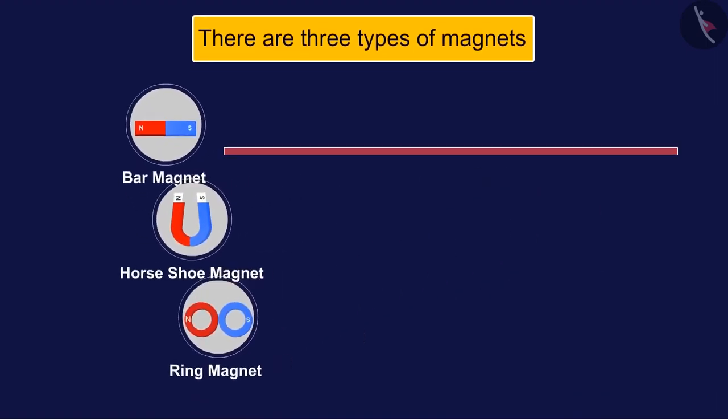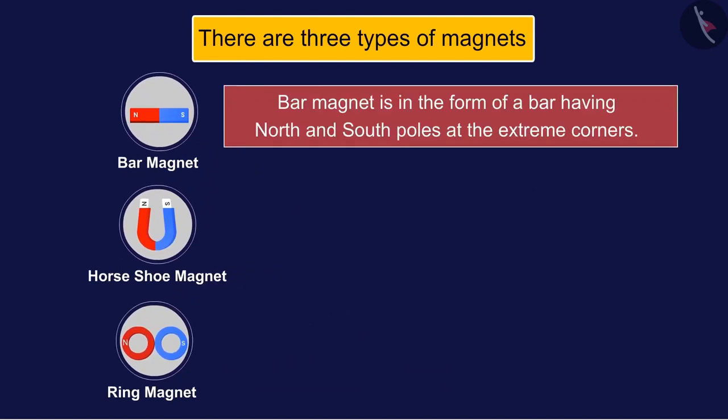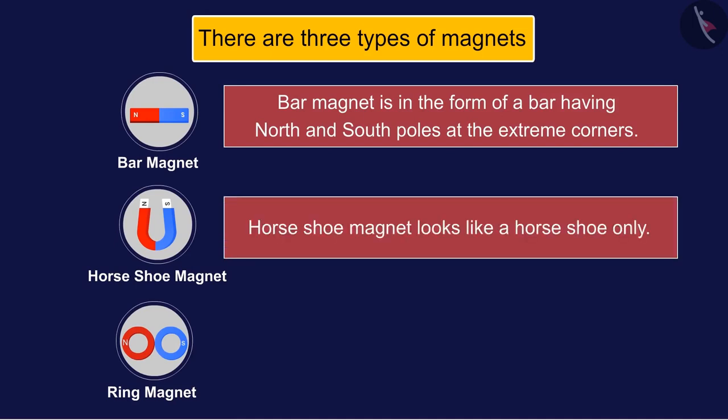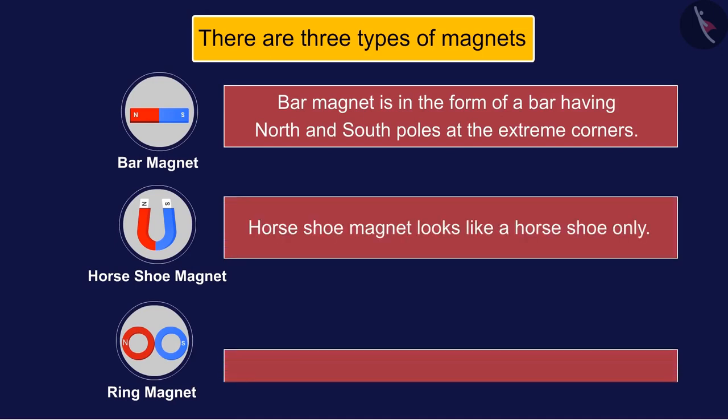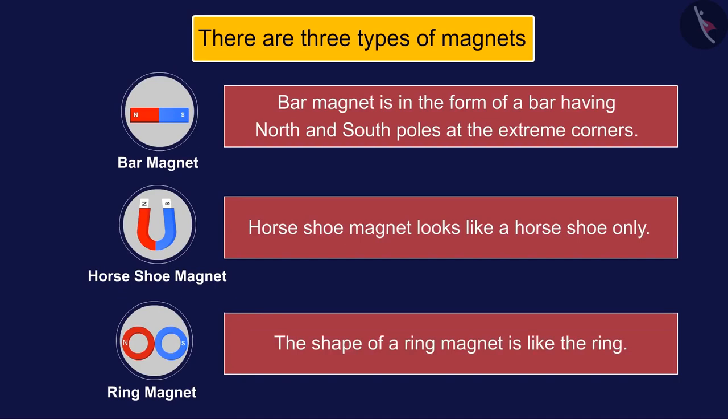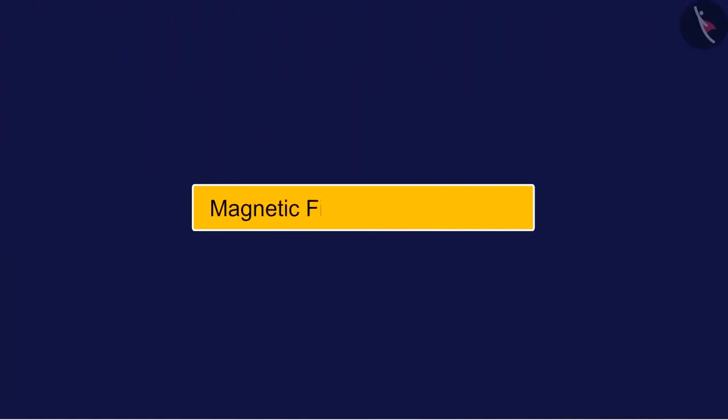Bar magnet is in the form of a bar having north and south poles at the extreme corners. Horseshoe magnet looks like a horseshoe only. Similarly, the shape of a ring magnet is like the shape of a ring.